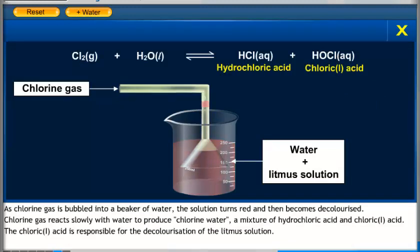As chlorine gas is bubbled into a beaker of water, the solution turns red and then becomes decolorized. Chlorine gas reacts slowly with water to produce chlorine water, a mixture of hydrochloric acid and chloric acid. Chloric acid is responsible for the decolorization of the litmus solution.